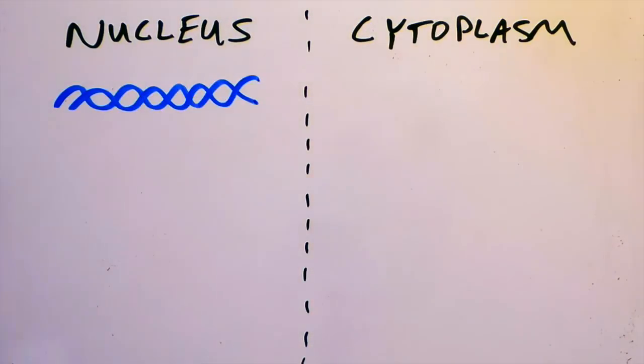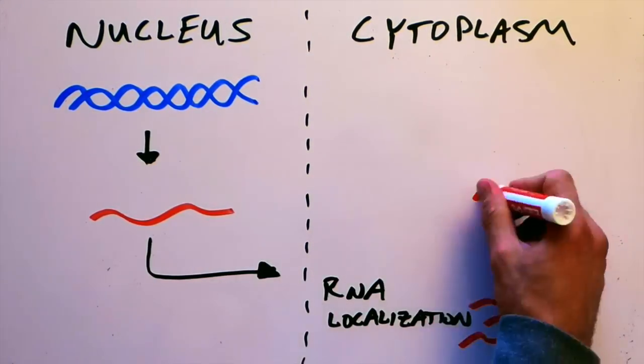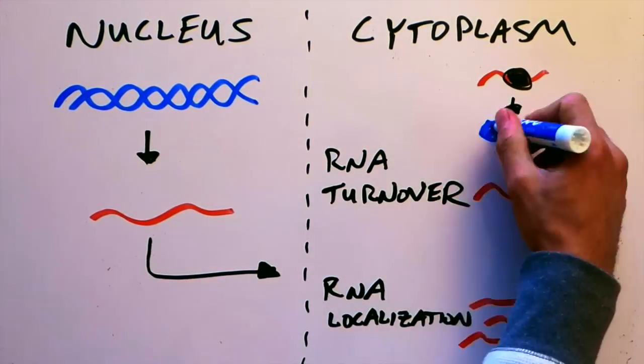Cells are very careful about how they produce RNA, and RNA is subjected to a variety of processing steps, including transport of the RNA to specific places in the cell, control of turnover or destruction of RNAs, and eventual translation of the RNA into protein.